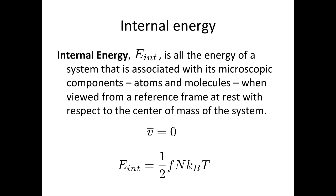So, internal energy. Internal energy is all the energy of a system that is associated with its microscopic components — atoms and molecules — when viewed from a reference frame at rest with respect to the center of mass of the system. It's given the symbol E with a subscript INT, standing for internal. This is essentially what we were calculating with the degrees of freedom, because that told us how much energy a gas could store. So the internal energy is given by ½ f n k_B T.